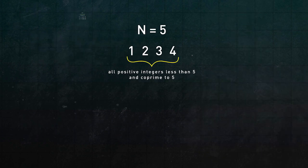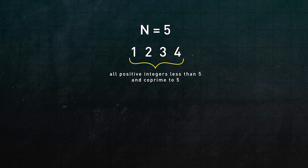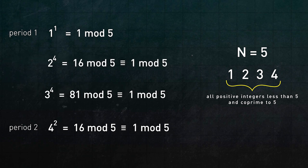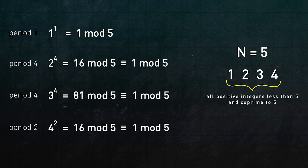How about when n equals 5? Well, since 5 is prime, all the positive integers below 5, that's 1 through 4, are coprime to 5. Again, 1 has a period of 1, and 4 has a period of 2. But notice that this time, 2 and 3 each have a mod 5 period of 4.